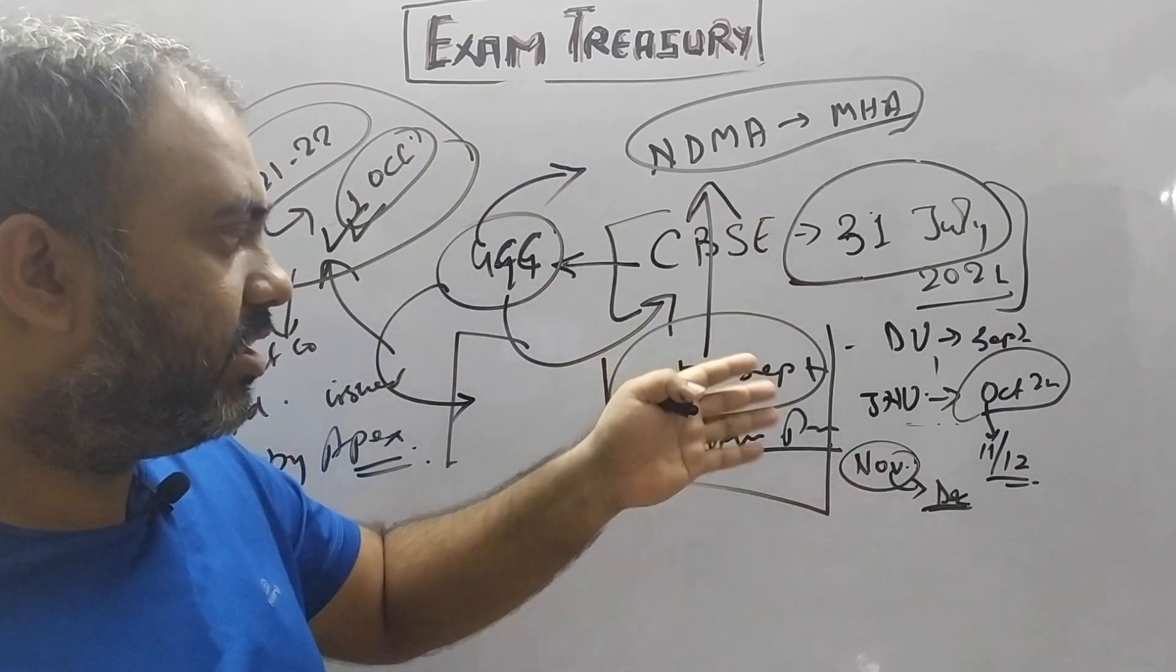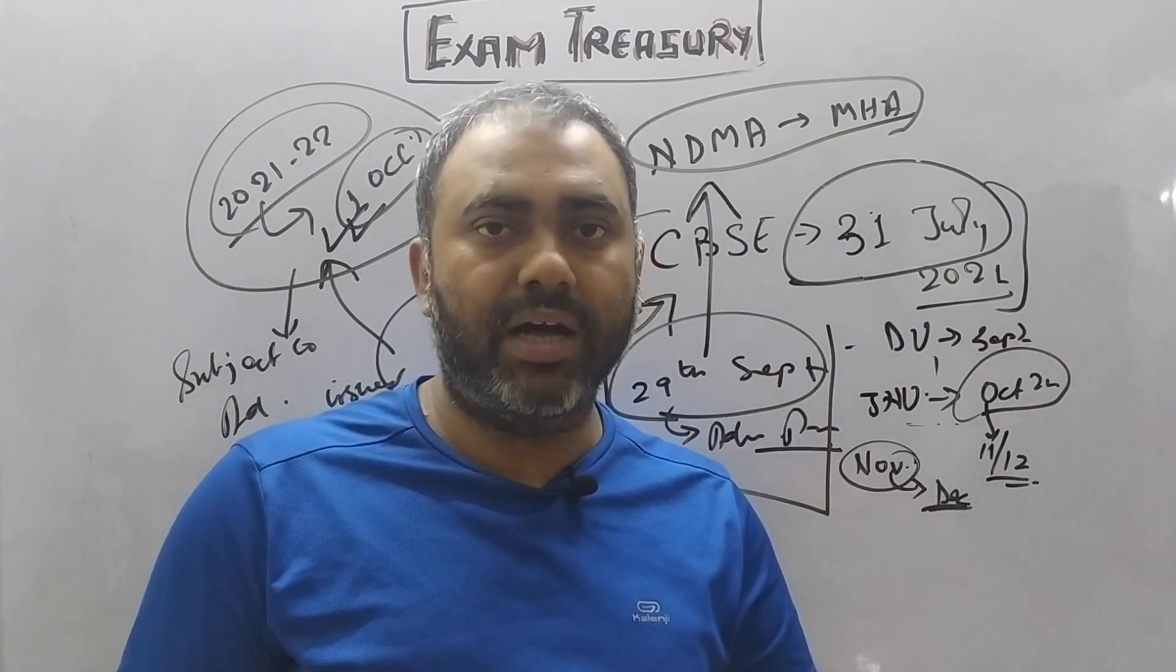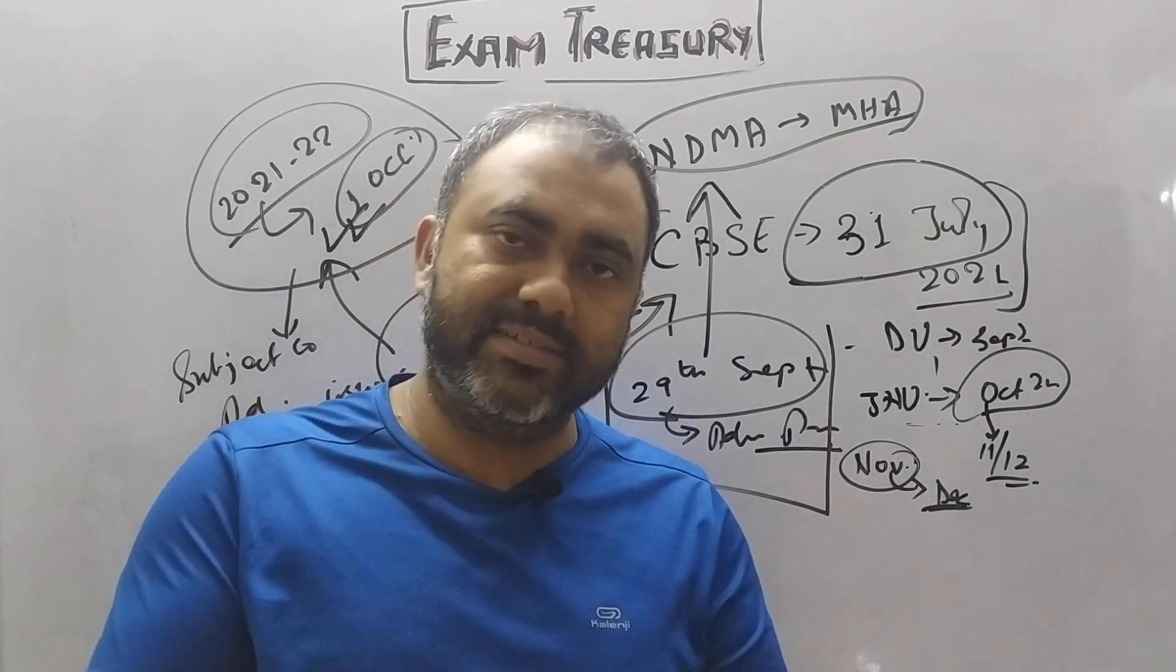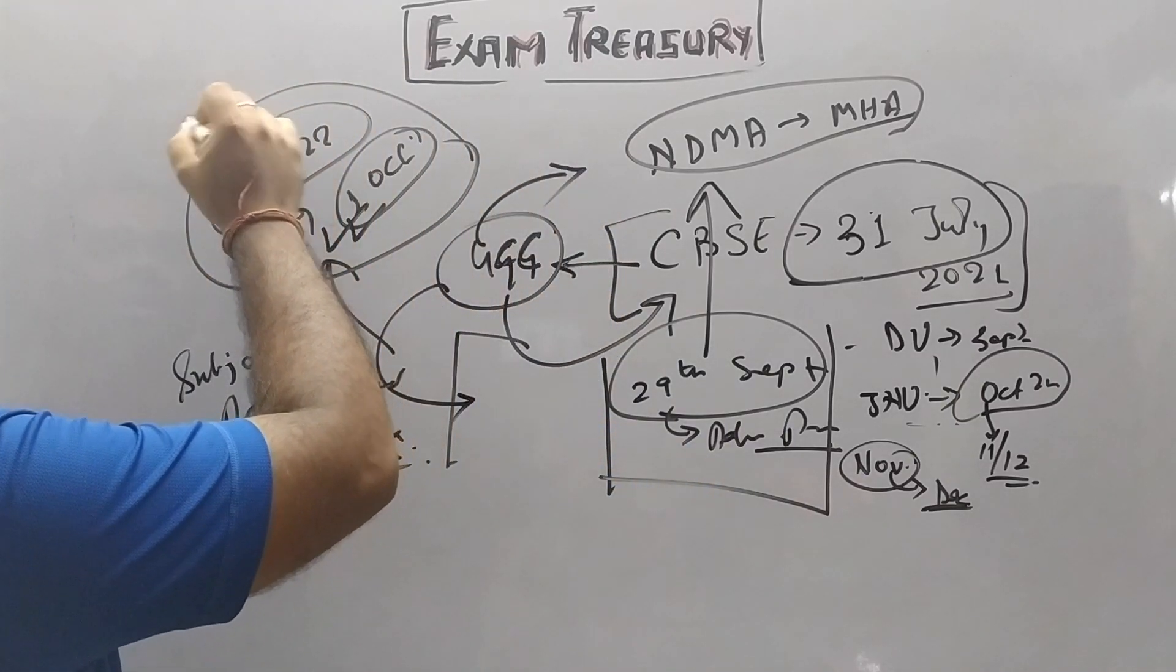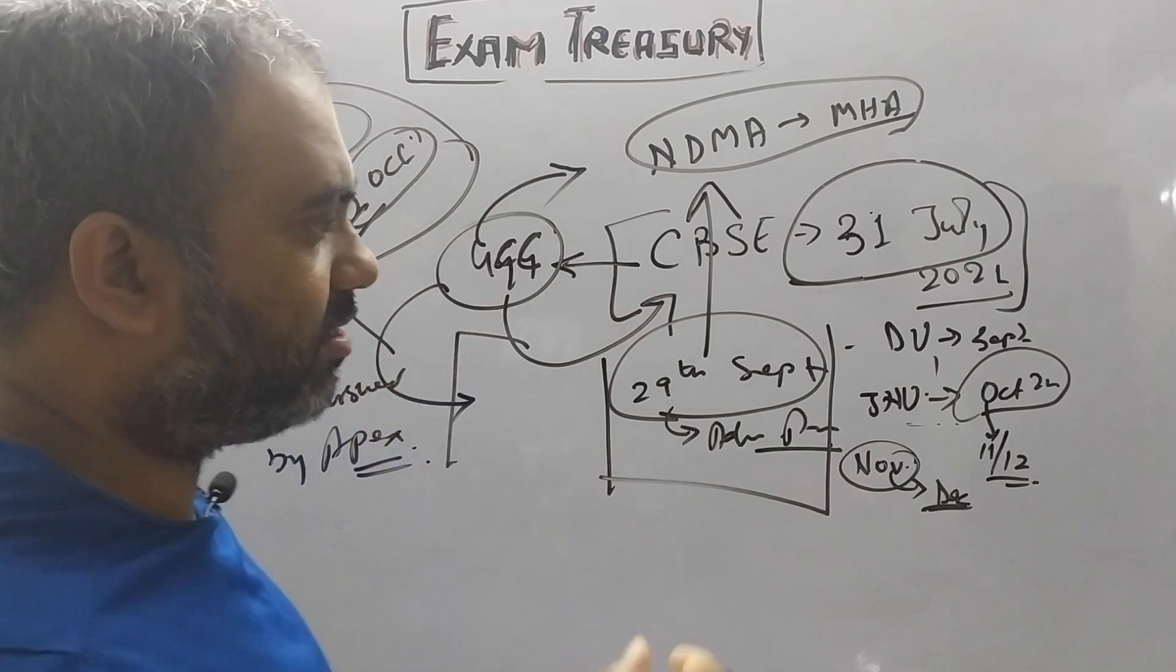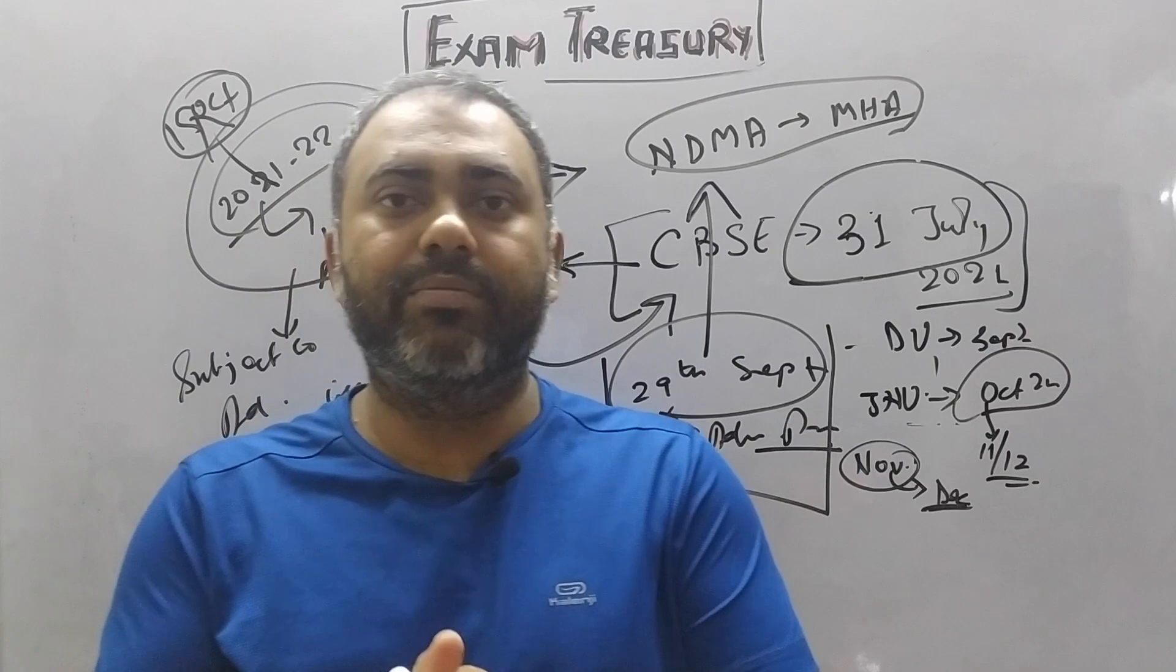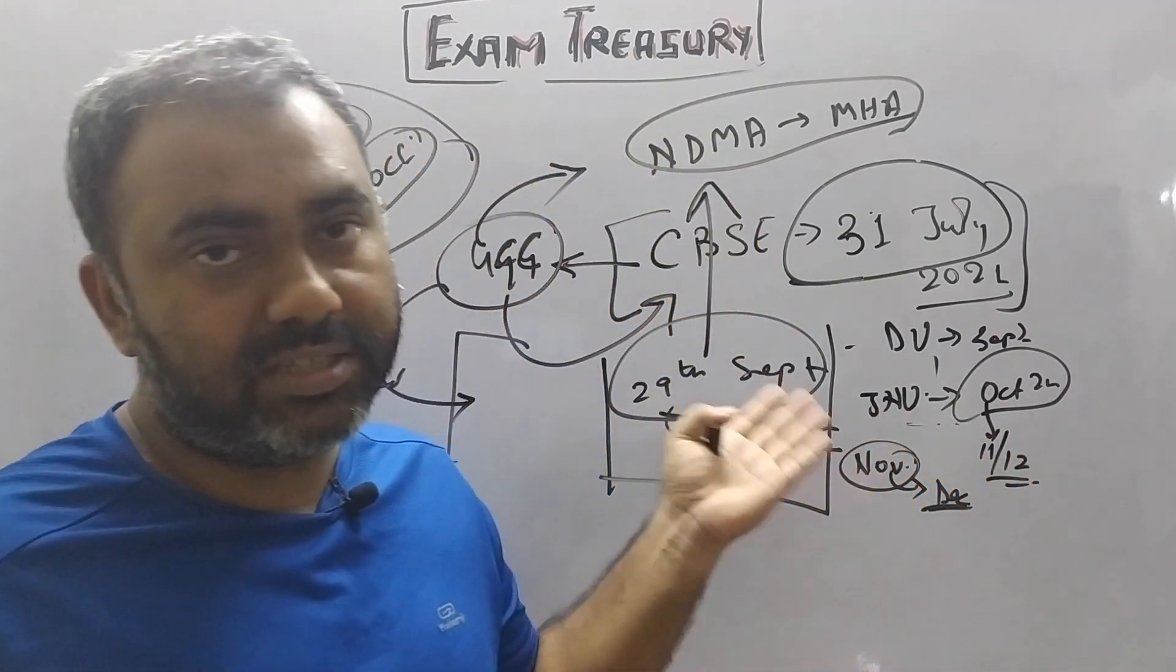Secondly, all colleges and universities who have not declared undergraduate or postgraduate marks, UGC has said you have time until 15th October. You have to declare marks by then. Because there are many universities who have not completed this yet.